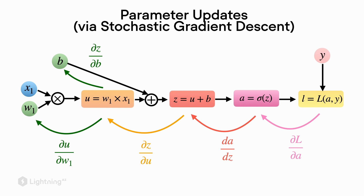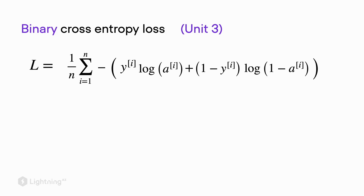What we see here is the computation graph for logistic regression that we covered in unit three, along with the partial derivatives computed there. Don't worry, we won't be computing more partial derivatives now, because now that we learned about automatic differentiation we know that we don't have to worry about them when implementing things in PyTorch. However, we do have to talk about the loss function.